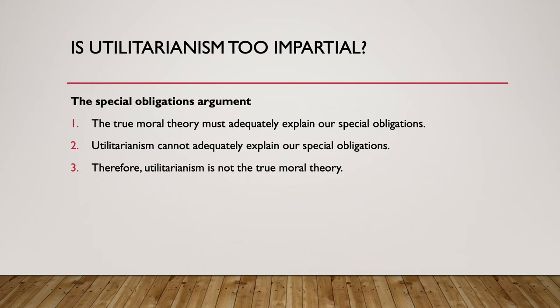There are a number of things a utilitarian might say in response. One option is to claim we're just wrong that we have these special obligations. Another is to argue that because of my relationship with my kids and family and friends, I know them better, and so I know their needs better — I'm in a better position to help them. When deciding between helping my own child study for an exam versus a stranger's child, I don't know the stranger as well, so I can't help them as effectively.